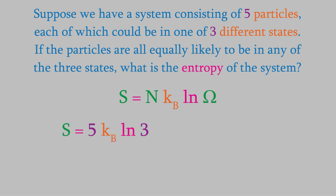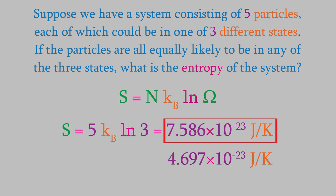If we plug that into our equation, we get an entropy of 7.586 × 10⁻²³ joules per kelvin. Notice that this entropy is a little higher than the one that we got in the first case. That makes sense. If all the particles were in the same energy state, that would be a perfectly ordered system.